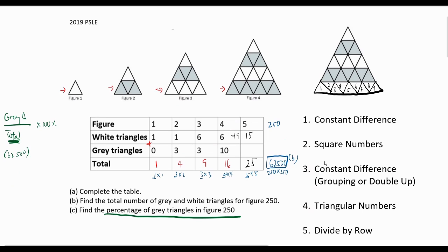Another method we can try is to create another row for the difference between white and grey triangles. Notice that the difference for each figure is the figure number itself. But be careful, are there more grey or white triangles? Again, it's not consistent.